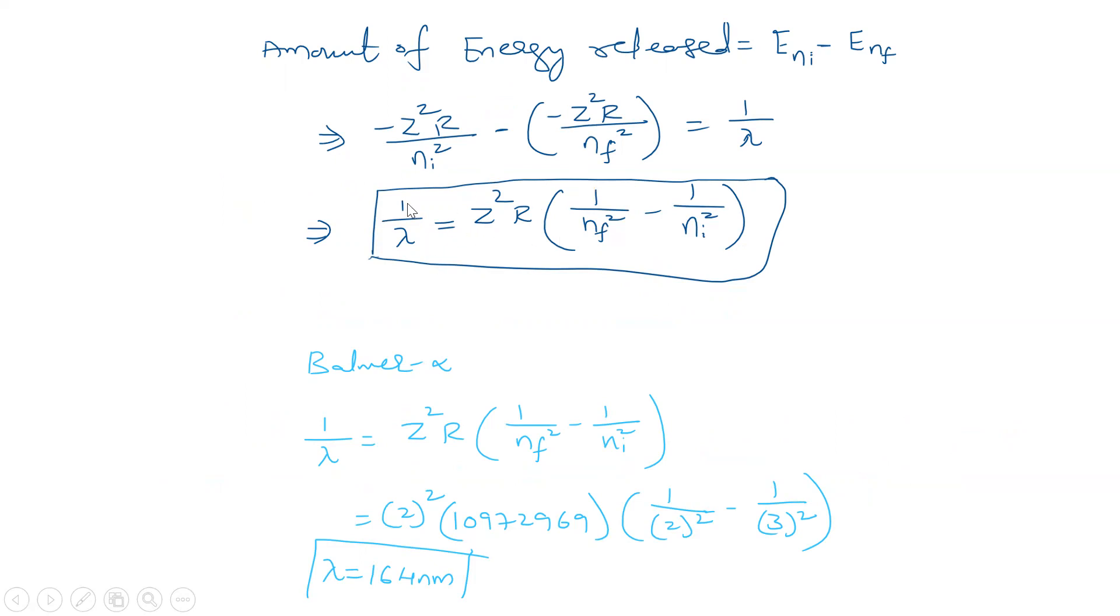This is how we got the derivation for singly ionized helium. What is the wavelength of Balmer alpha for singly ionized helium which is 1 by lambda equal to Z squared R times 1 by nf squared minus 1 by ni squared. For Balmer alpha the transition is from third to second orbit, so nf is 2 and ni is 3.